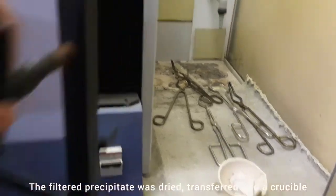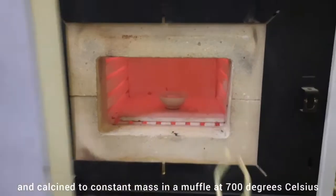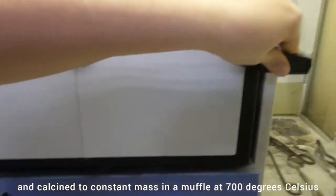The filtered precipitate was dried, transferred into a crucible and calcinated to constant mass in a muffle at 700 degrees Celsius.